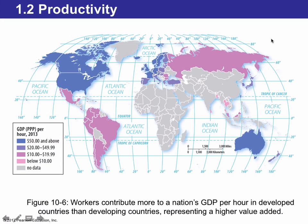Productivity means how much per person we produce in each country. The most developed nations have a high productivity rate — $50 and above per hour for the United States and Australia, for example. But in parts of the developing world, even places like Russia have low productivity measures, below $10 per hour per person. This data is from 2013.